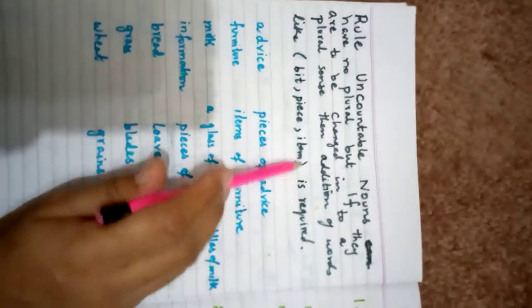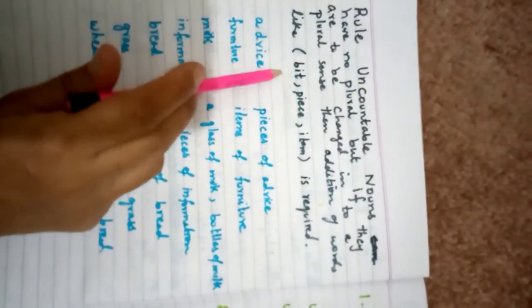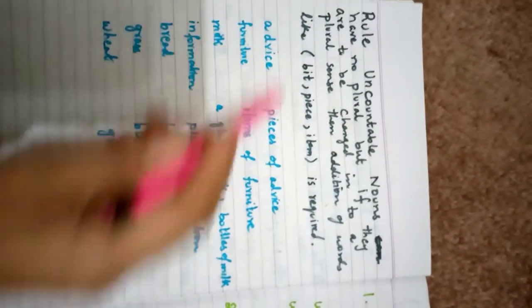They have no plural. But if they are to be changed into a plural sense, then you can add a bit, piece, or items. For example, advice: he gave me many pieces of advice. Furniture: he bought many items of furniture.